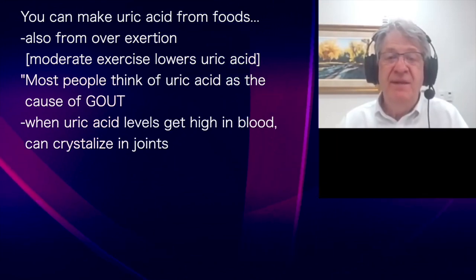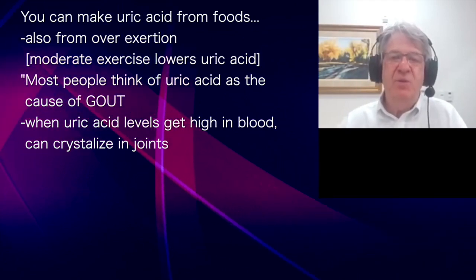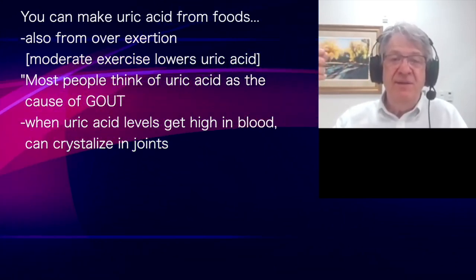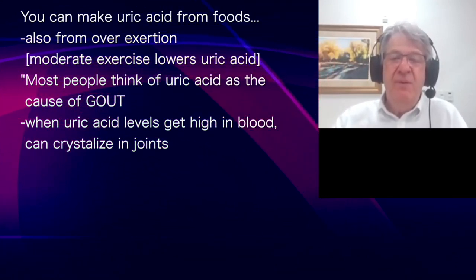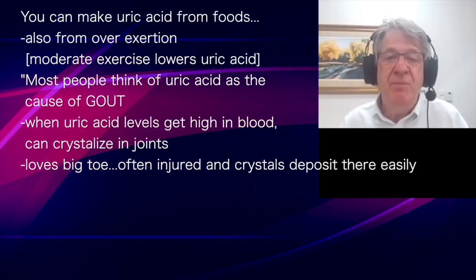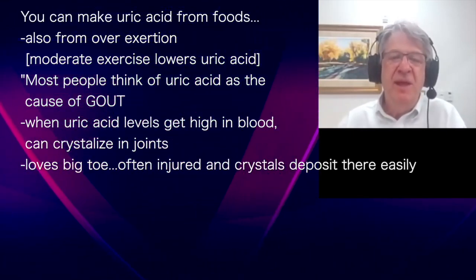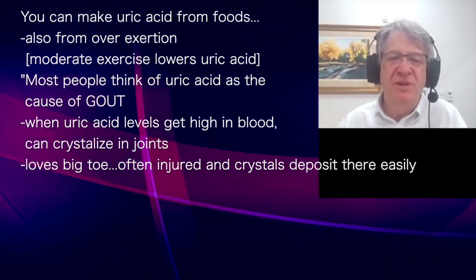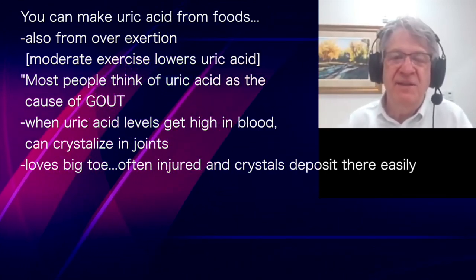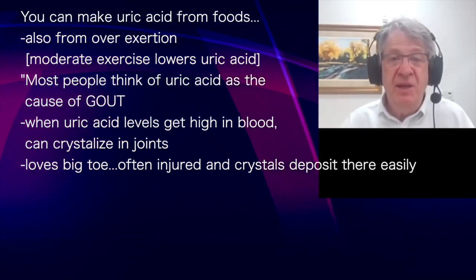Most people think of uric acid as the cause of gout. Gout is the disease where uric acid levels get high in the blood, and the uric acid can crystallize because it's poorly soluble. It typically crystallizes in joints — it loves the big toe because we walk on it, and that toe often has a little damage from years of walking, making it easier for crystals to deposit there. Gout is the classic disease people think of when they get their uric acid checked.